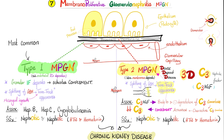The second nephrotic-nephritic condition is membranoproliferative glomerulonephritis. Type 1 has subendothelial immune complexes, similar to diffuse proliferative, but the associations are hepatitis B, hepatitis C, and cryoglobulinemia. Don't forget the tram-track appearance. Type 2 has deposits that go into the glomerular basement membrane — intramembranous — splitting the basement membrane and giving the classic tram-track appearance. Type 2 is associated with C3 nephritic factor.